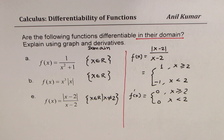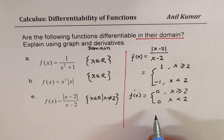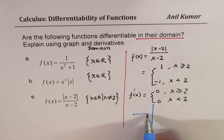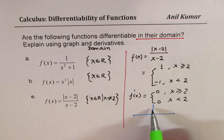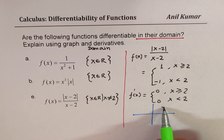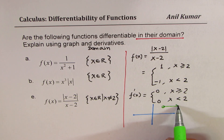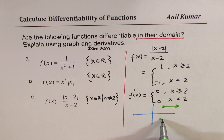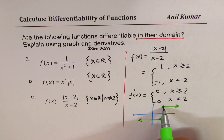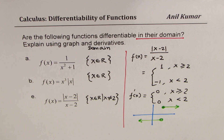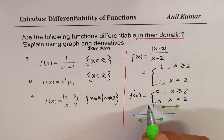If I sketch the given function, the graph will be at positive 1 for x at and to the right of 2, with a filled dot since we include x greater than or equal to 2 for the positive side, and negative 1 on the left side. This is basically f of x.